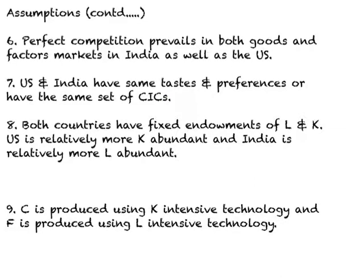The eighth assumption is that both countries have fixed endowments of labor and capital, or a fixed supply of labor and capital. Further, the U.S. is relatively more capital abundant and India is relatively more labor abundant. Since the U.S. has relatively more machines per worker, wages must be higher relative to rent in the U.S. And since India is labor abundant, wages must be lower relatively speaking, and rent must be higher in India in autarchy.